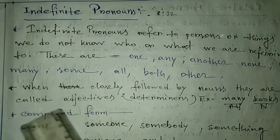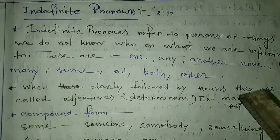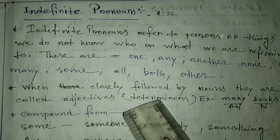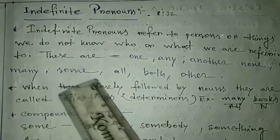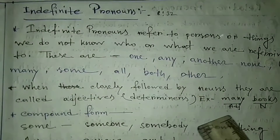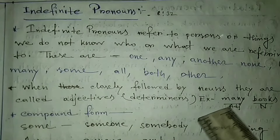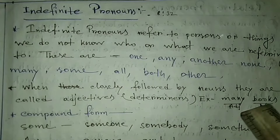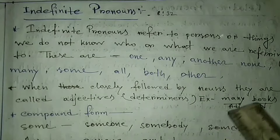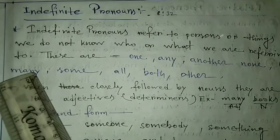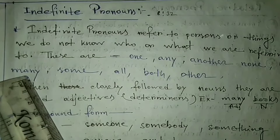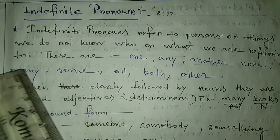When closely followed by nouns, they are called adjectives or determiners. Means when these are followed by any nouns, then these are called adjectives. For example, 'many books' — 'many' is actually describing the books, it is telling something about the books, means the noun. So here it is actually an adjective. But whenever it is used without any noun, then it will be called an indefinite pronoun.